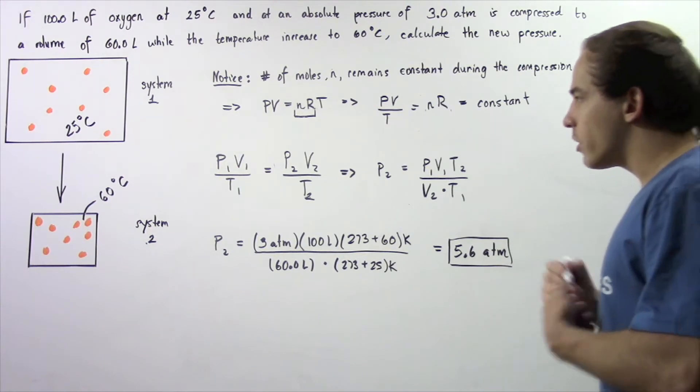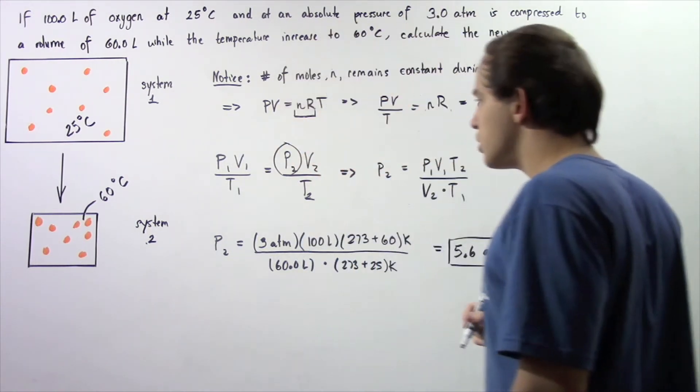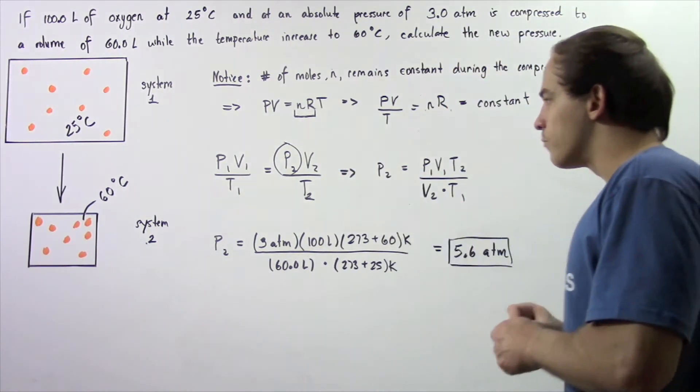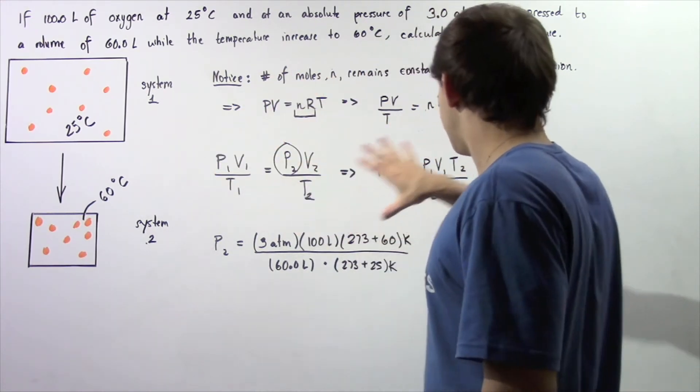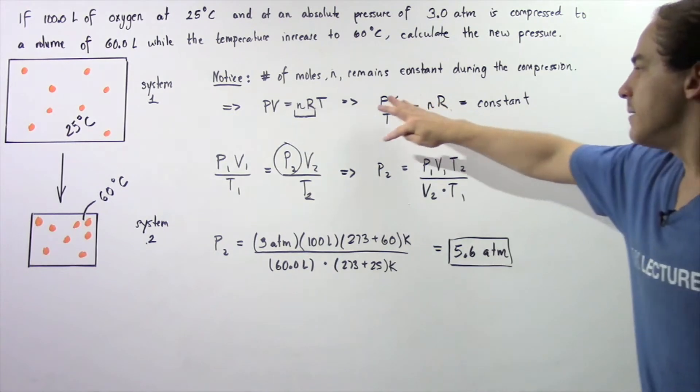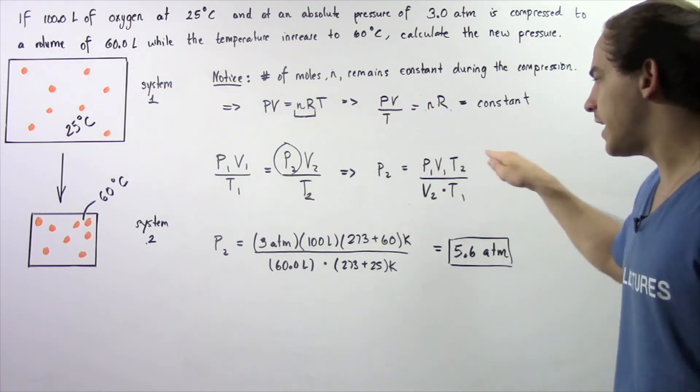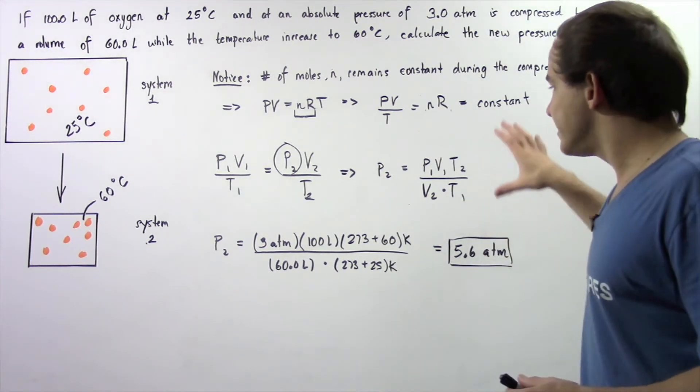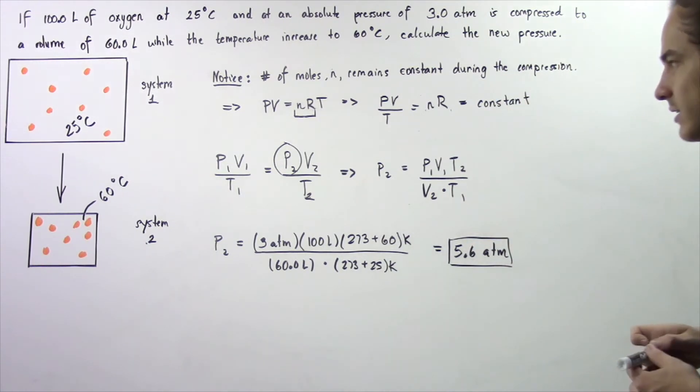So what we want to solve for is P2. We essentially want to rearrange this equation and solve for P2. So we bring T2 to the left and V2 to the left and we get the following result: P2 is equal to P1V1T2 divided by V2 multiplied by T1. We want to determine all these values then plug them into our calculator and find what P2 is.